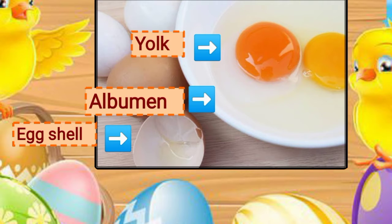Now let's understand about the parts of a bird's egg. An egg has a thin protective shell called the egg shell. Within the egg shell is a white jelly-like substance called the albumen, which is rich in protein. The yellow inner part of the egg is the yolk, and it is rich in fats, vitamins, and minerals. The yolk contains food for the growing baby or embryo, which further develops into a chick. Within the egg, the embryo goes through various stages of development before the egg hatches and the chick comes out.